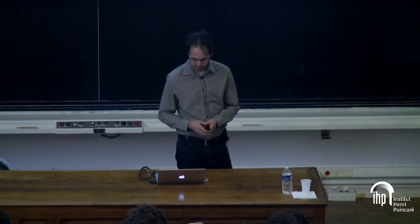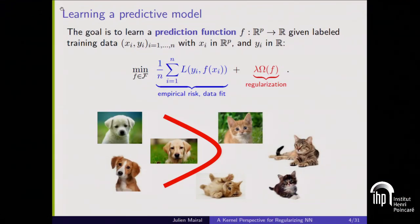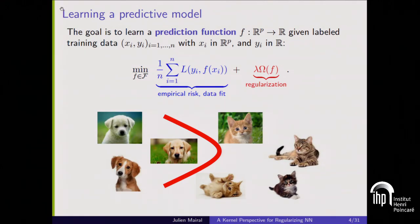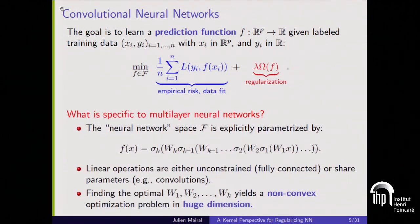I'll start with a brief introduction about convolutional neural networks. When I say deep neural networks in the title, I'm talking only about convolutional neural networks, which is a specific type. To fix the notation: given labeled data, we want to learn a prediction function f by minimizing some empirical risk, as many people do when they learn deep networks.